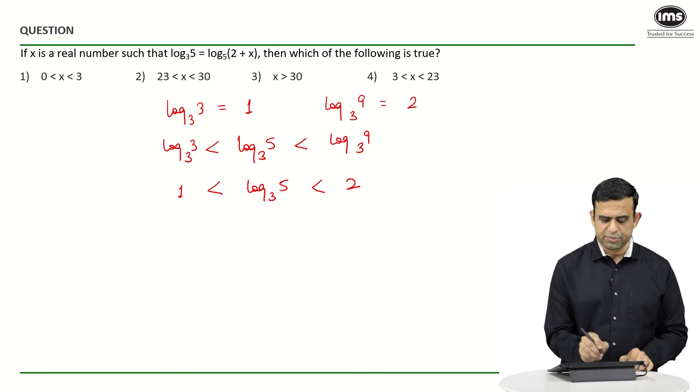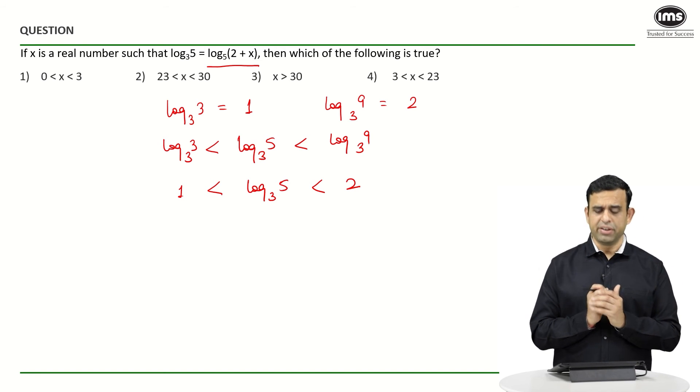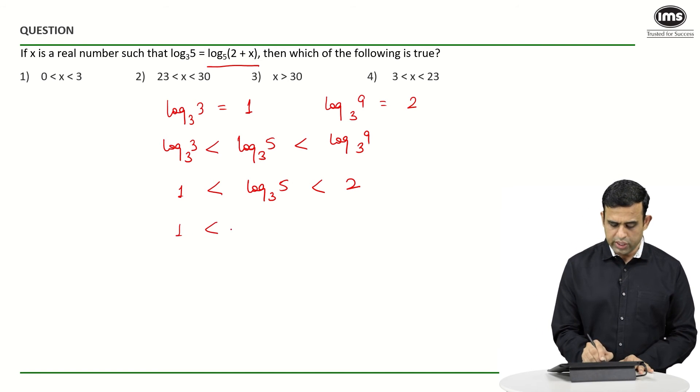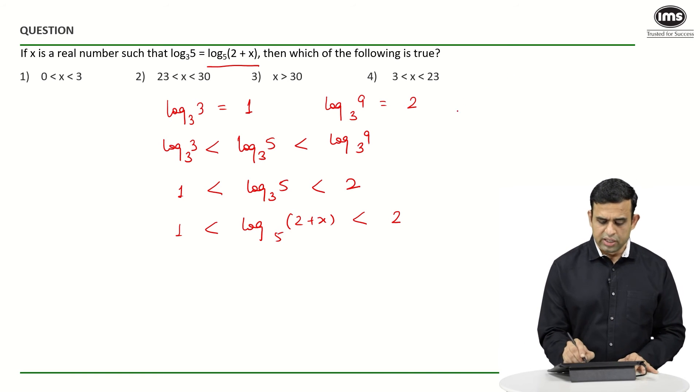So one can say log (2 + x) base 5 will be between 1 and 2. Then if I know the basic property of logarithms—that if you have log a to the base b equals n, then the value of a will be nothing but b raised to n—so in this particular case, can we say that...